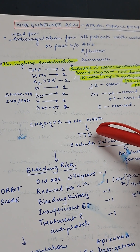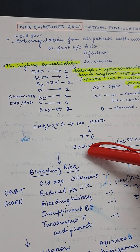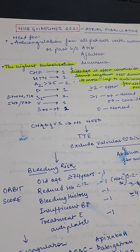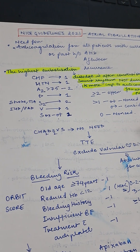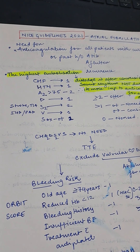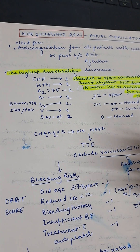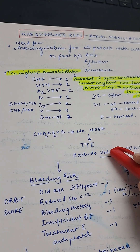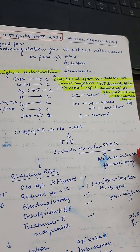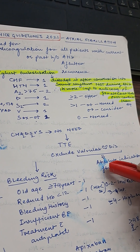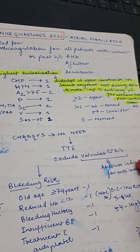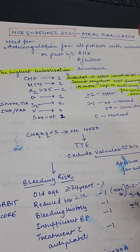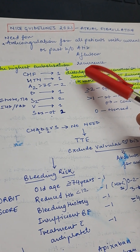Before calculating the CHA2DS2-VASc score, you first need to perform a transthoracic echocardiography to exclude valvular heart disease. If the patient has valvular heart disease, you do not need the CHA2DS2-VASc score at all, because valvular disease is an absolute indication for anticoagulation.